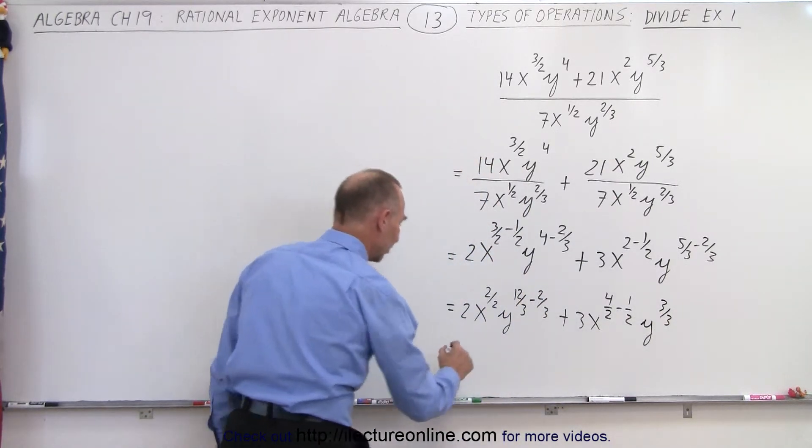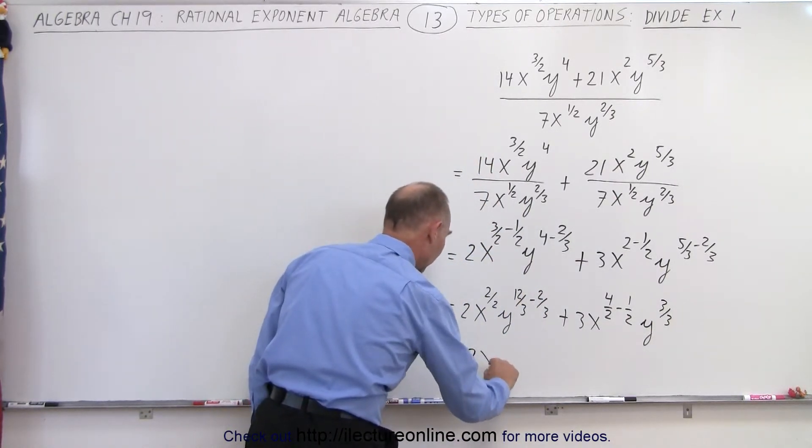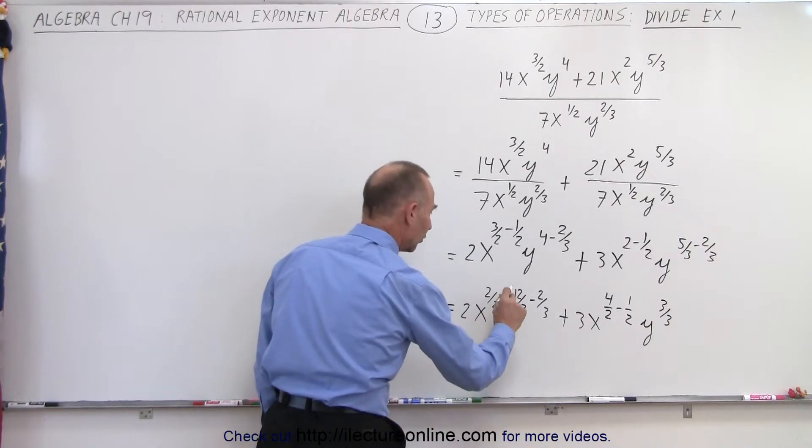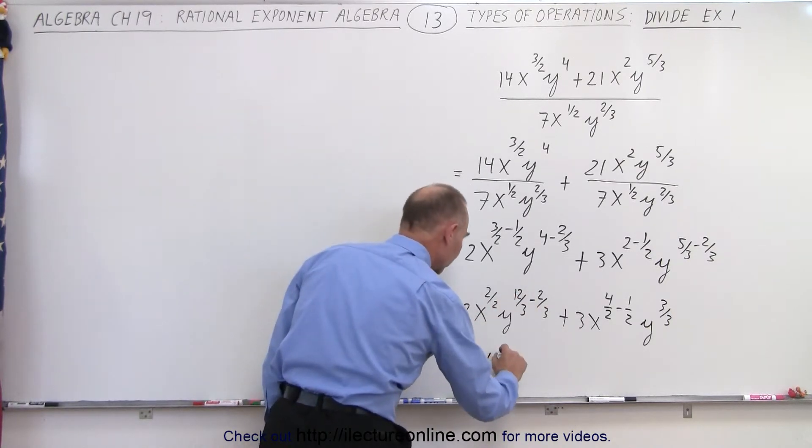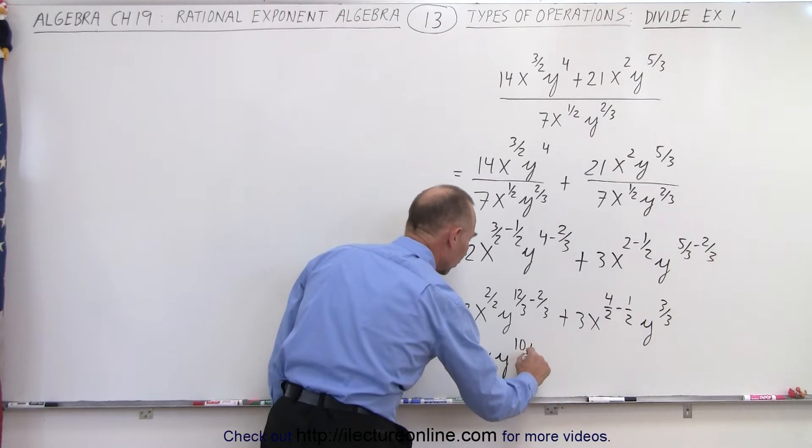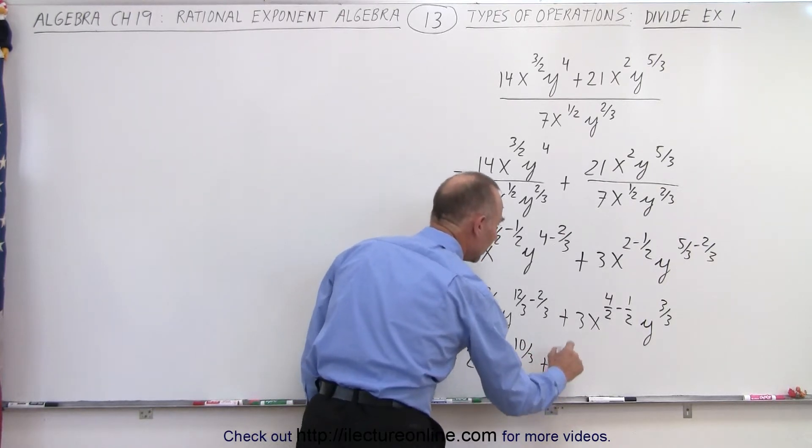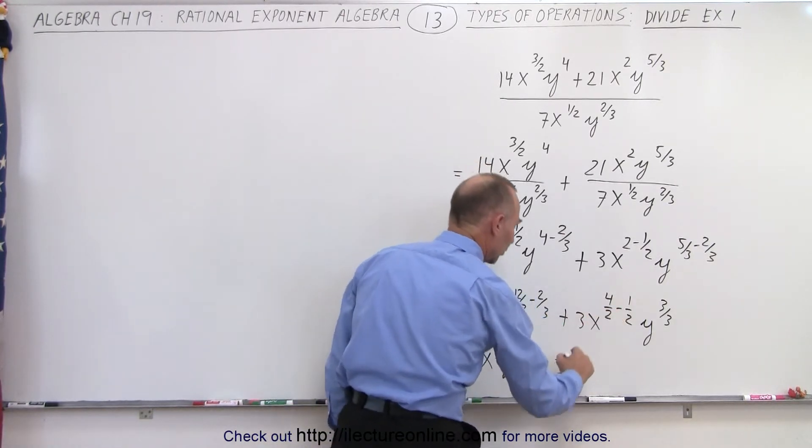All right, simplifying this a little bit more, this is equal to 2x^1, and y^(12 - 2), which is 10/3, y^(10/3) plus 3x^(4 - 1), which is 3/2.